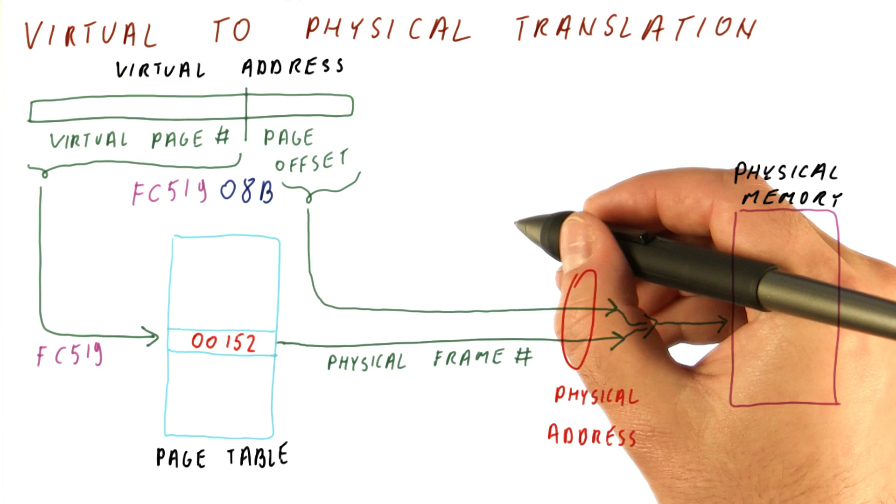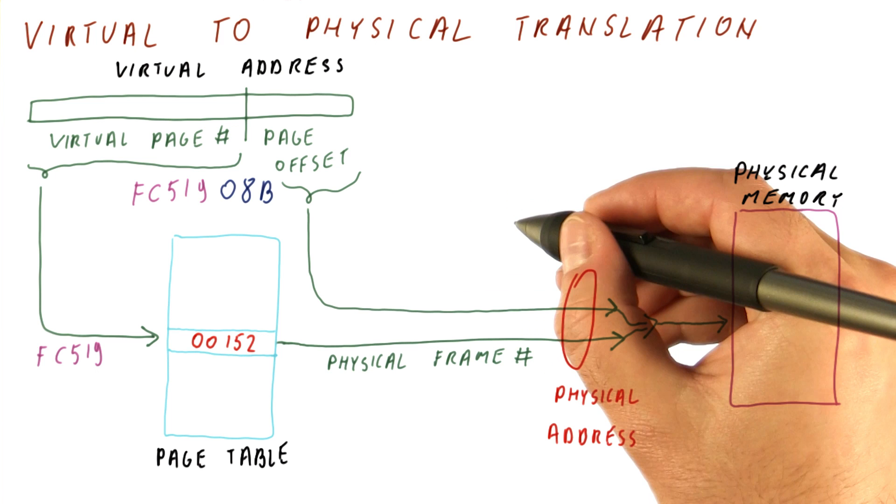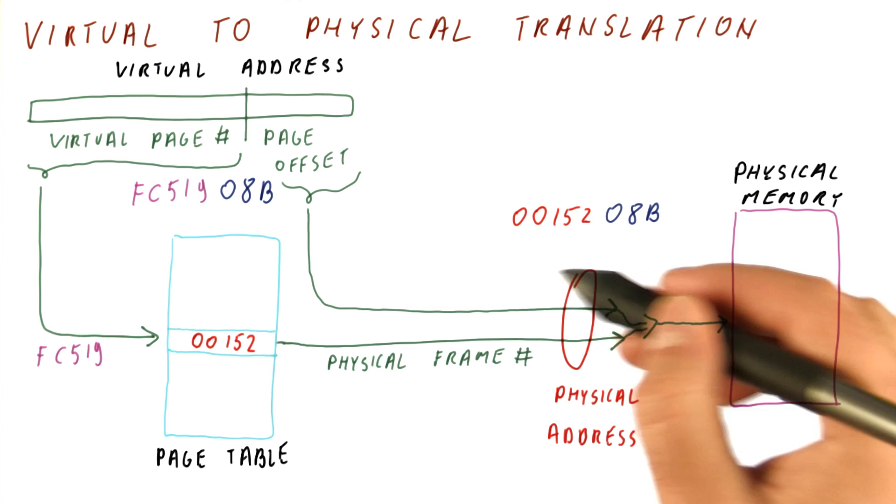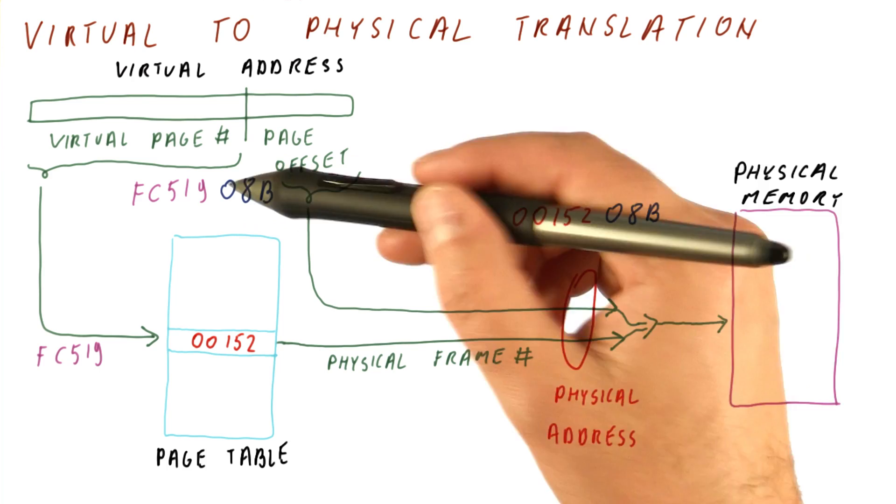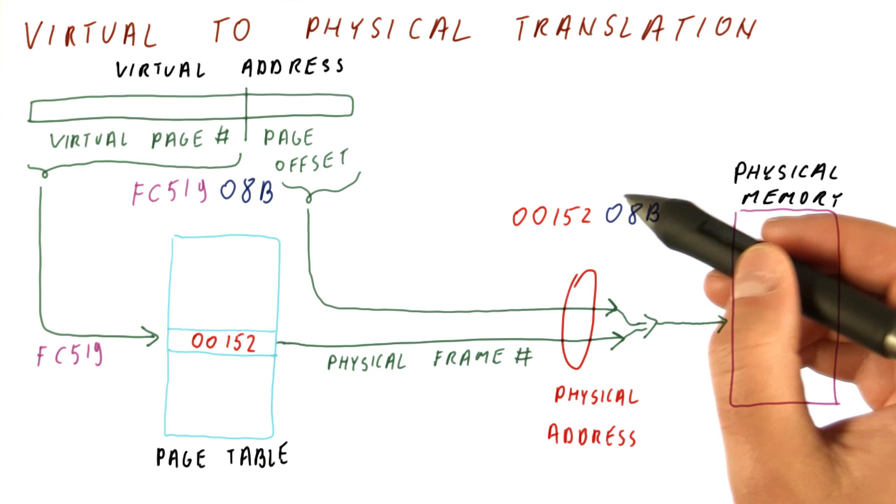In this example, the physical address is composed of the frame number and the page offset. This is a 32-bit physical address that we will use to access the memory. Note that the page offset is present in both the virtual and the physical address. The least significant bits that correspond to the page offset do not change when we translate into the physical address, but the virtual page number does change because it gets translated into the frame number.